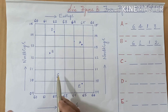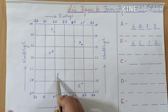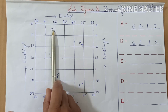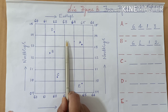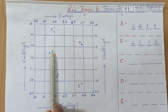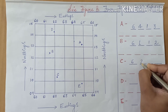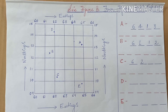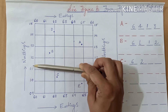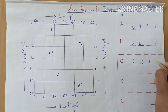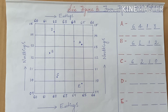Let us proceed to point C. For point C, the eastings lie between 62 and 63, so we take the lesser value — 62. For the northings, it is between 10 and 11, so we take the lesser value — 10. So we got the four figure grid reference for station C: 6210.